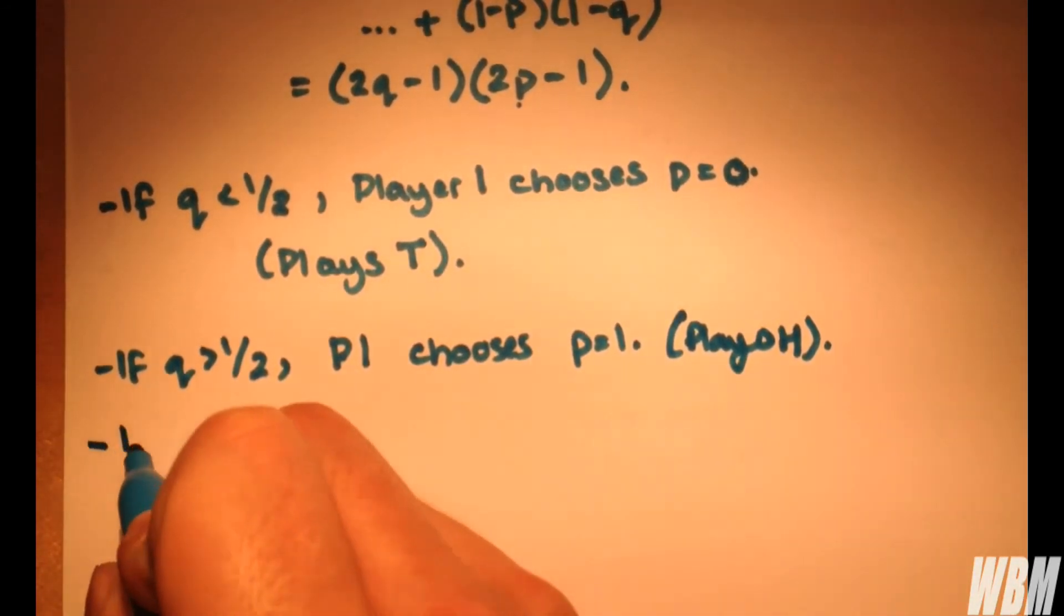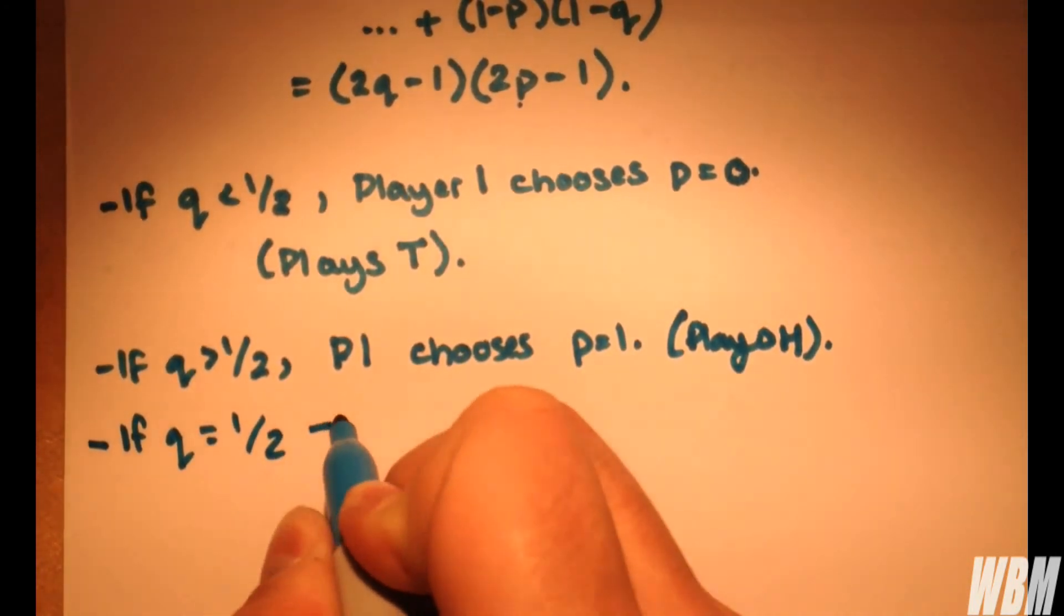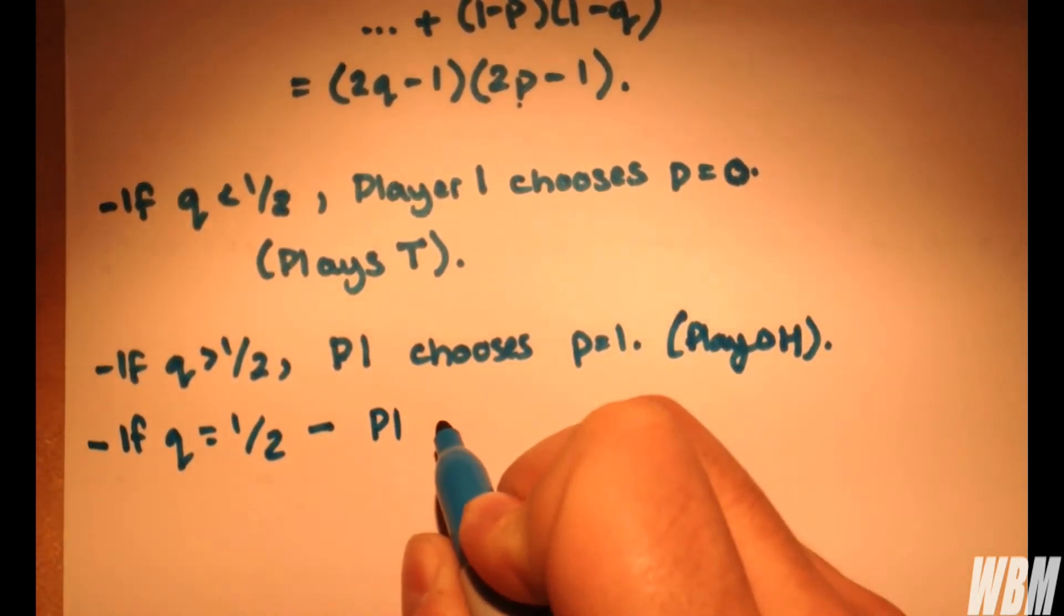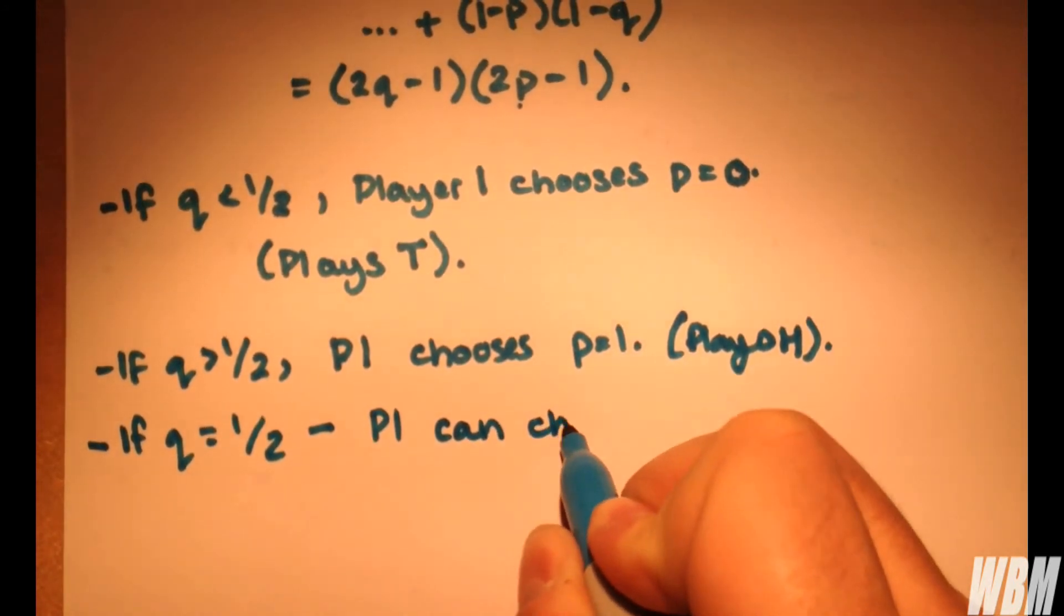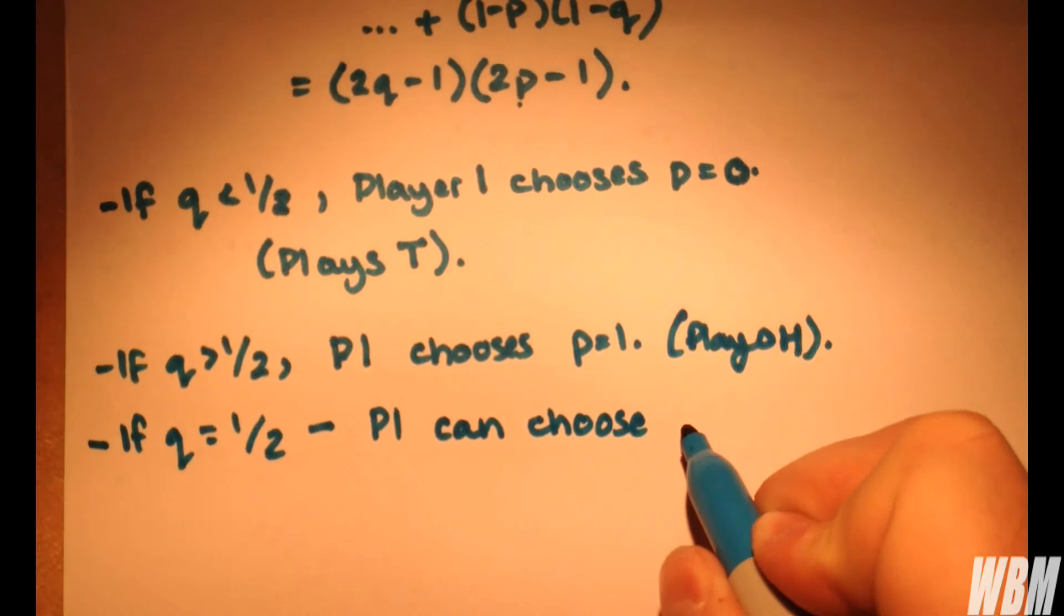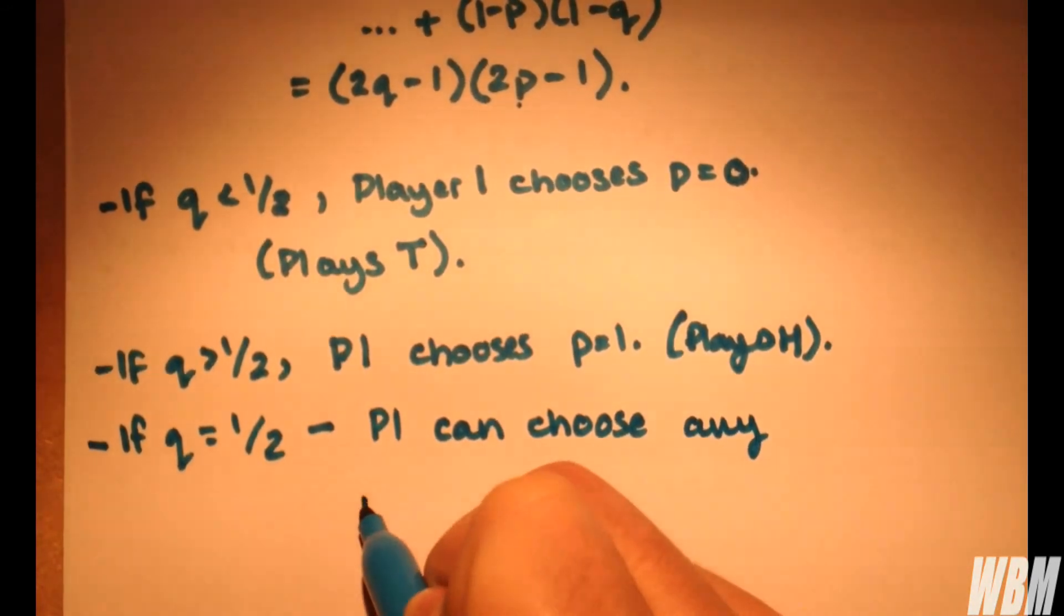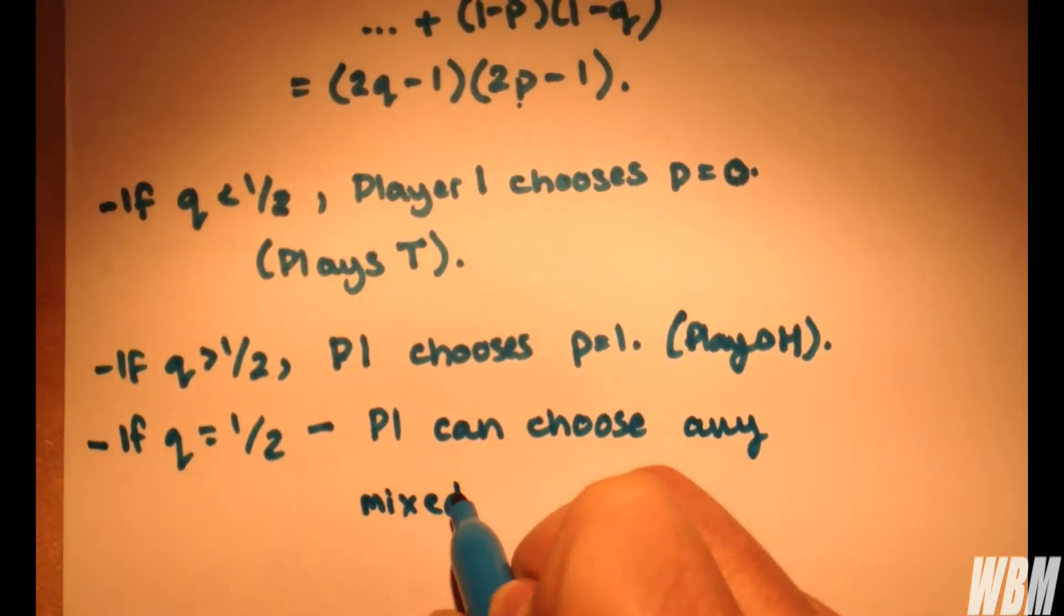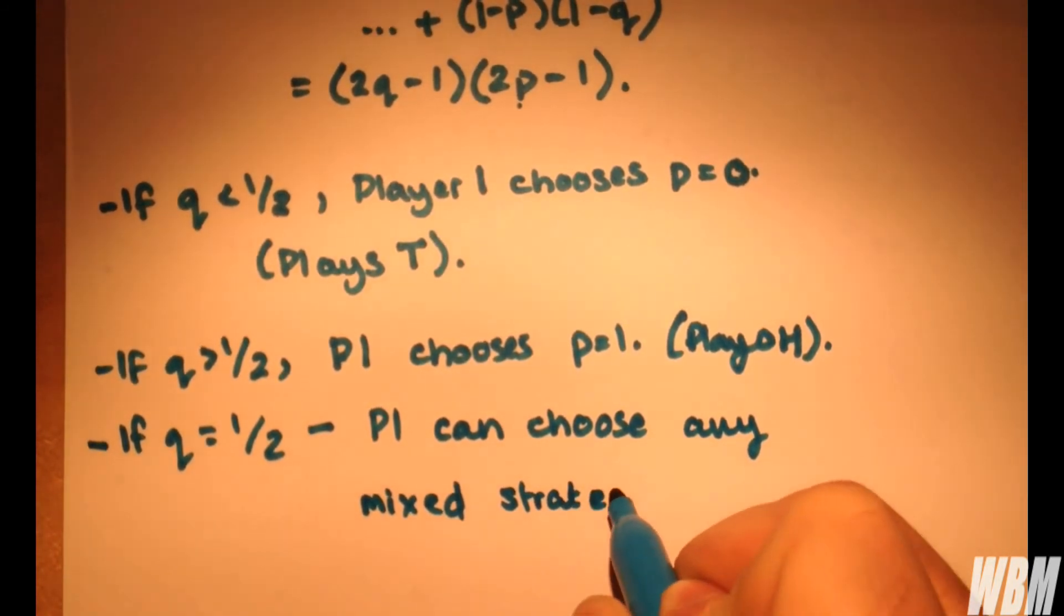However, if q is actually equal to a half, then player one can choose any mixed strategy. So it doesn't matter what he chooses if the coins are fair.